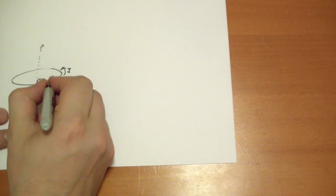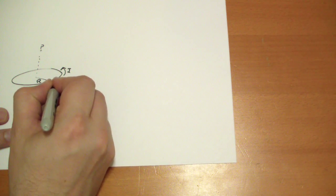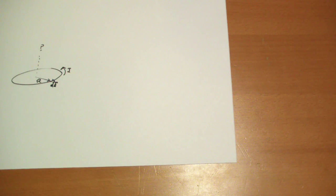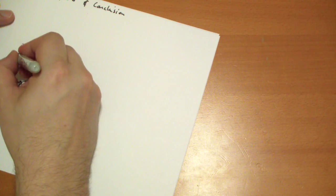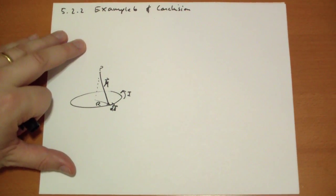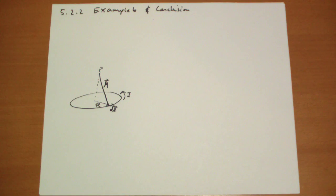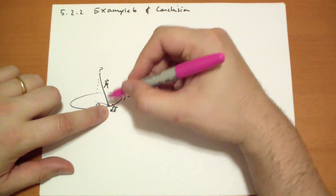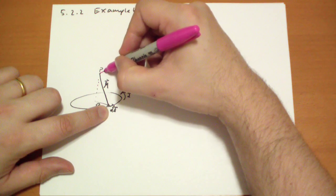So if we take a tiny slice of this ring, DL vector, and we have our R vector, then we can easily calculate the B vector. DL cross R vector is going to be perpendicular to both these vectors, pointing out basically like this.